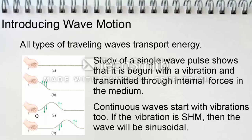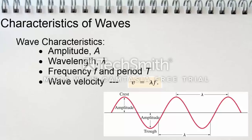This figure shows the motion of a wave pulsed to the right. Next, we have the characteristics of waves. Some common wave characteristics are amplitude, denoted by capital A; wavelength, denoted by the lambda symbol; frequency F and period T. And the wave velocity, V, can be found by multiplying the wavelength by the frequency.